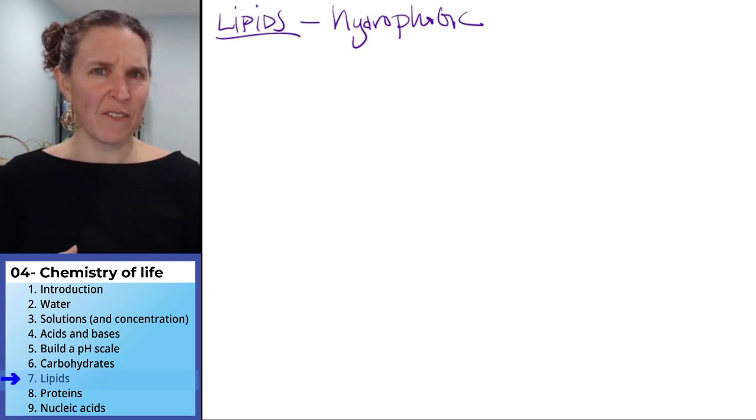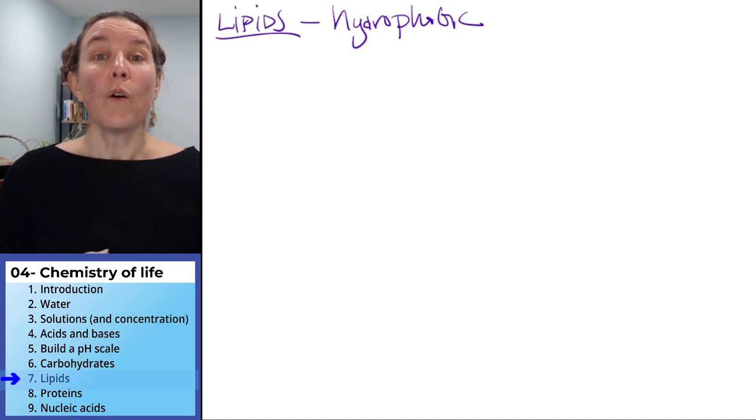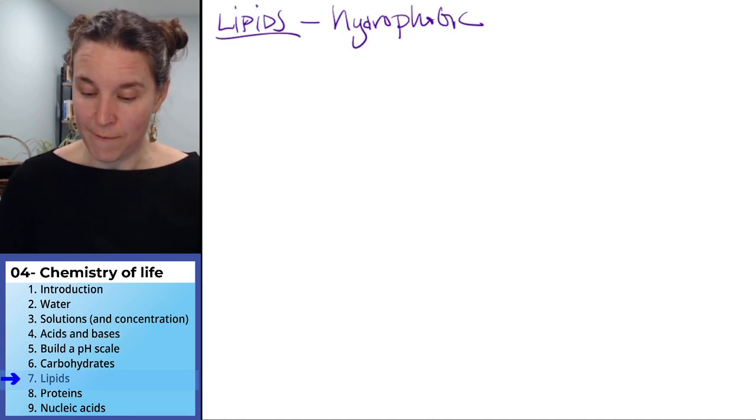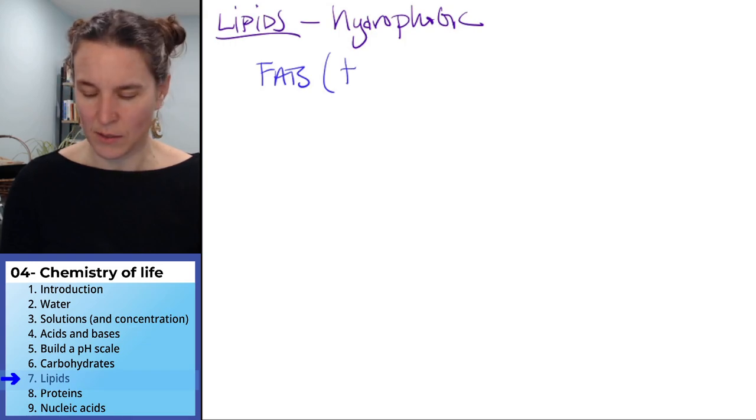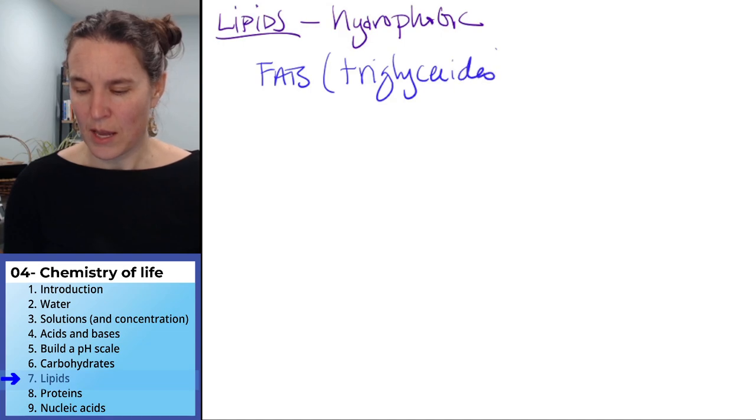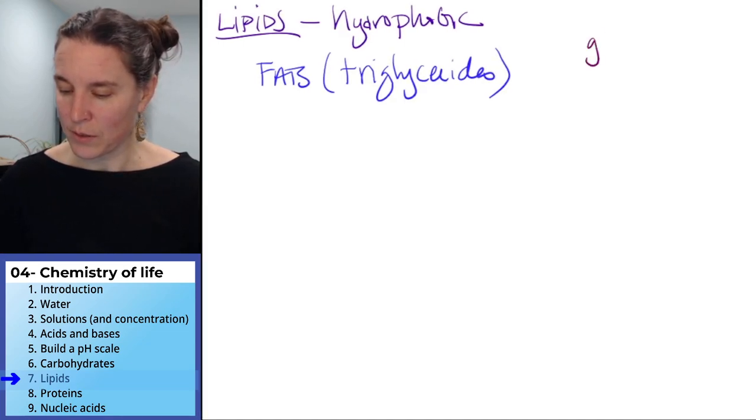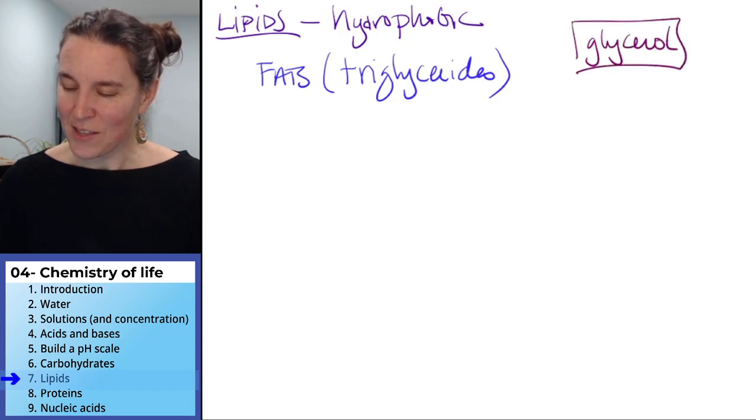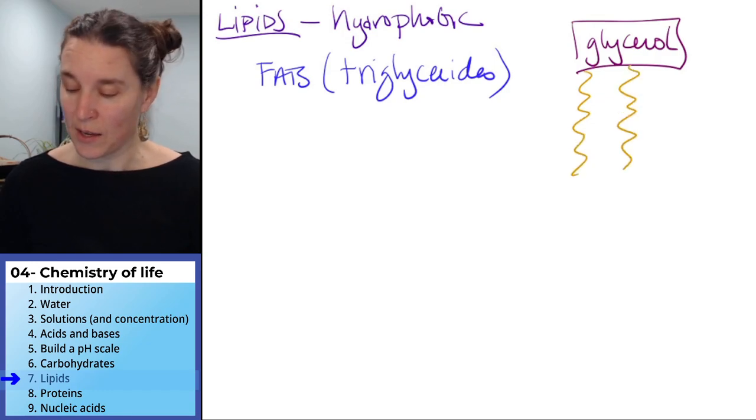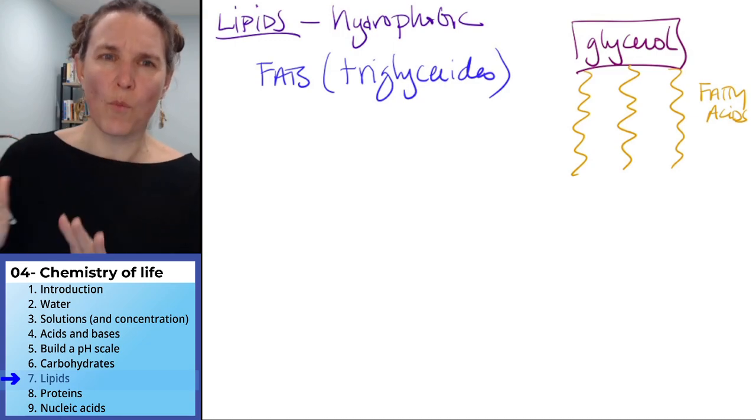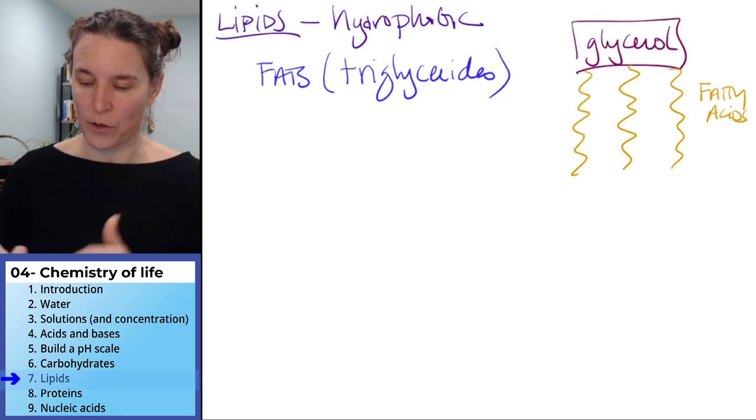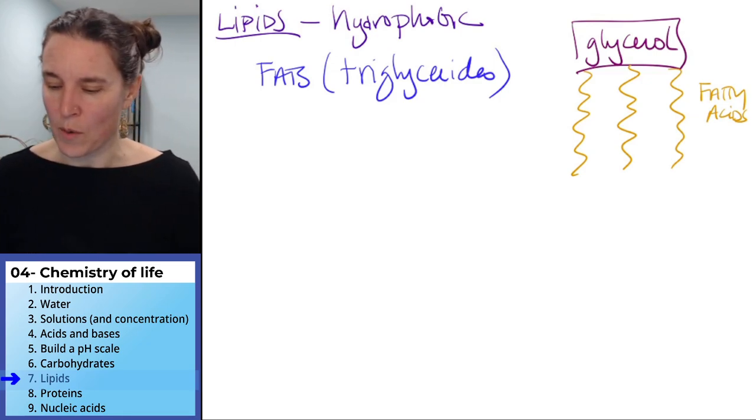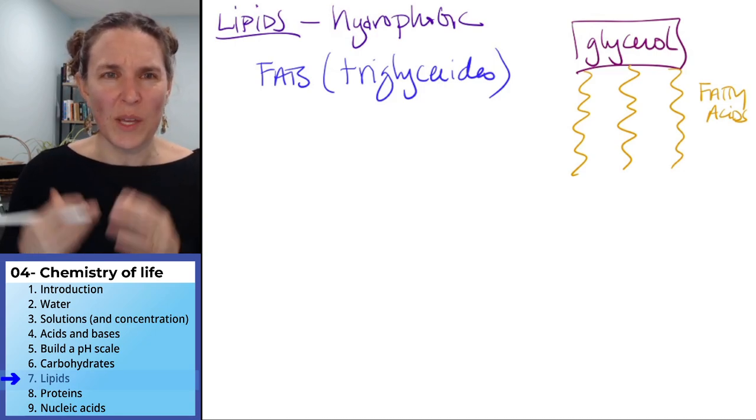Four types of lipids. The first one I'm going to tell you about are fats, also called triglycerides. Triglycerides are made of glycerol and then three fatty acids. I'm going to talk more about triglycerides and those fatty acid tails. We're going to see fatty acid tails in other groups, but hold on for just a second and I'll talk a little bit more about these guys.